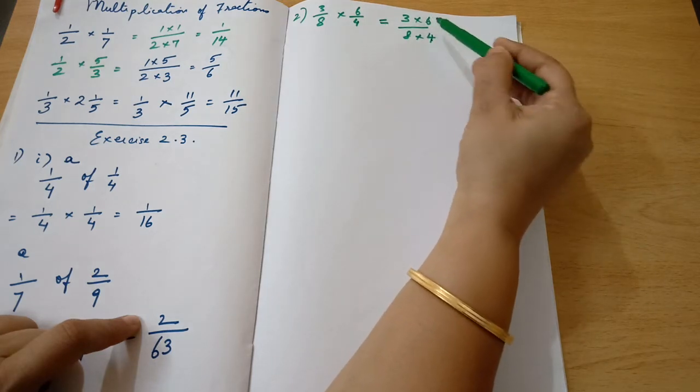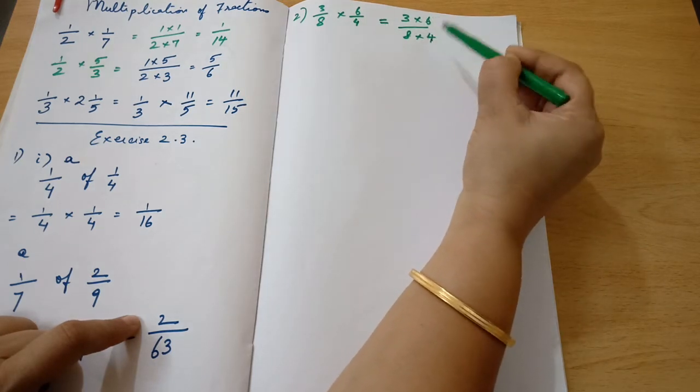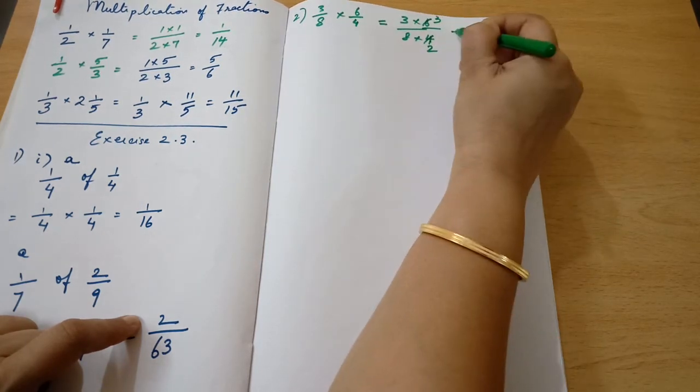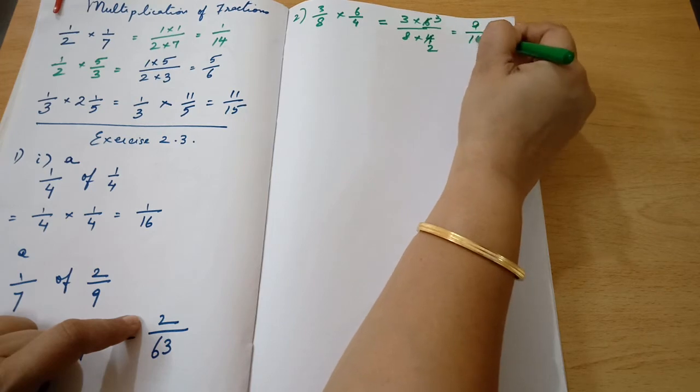Both of them are even numbers, they are in the 2 table. So 2 times 2 is 4 and 2 times 3 is 6. So the answer would be 9 by 16.